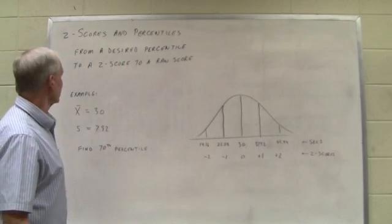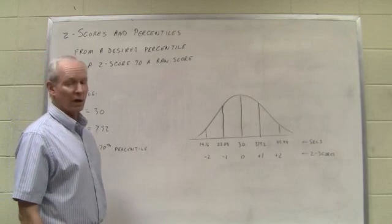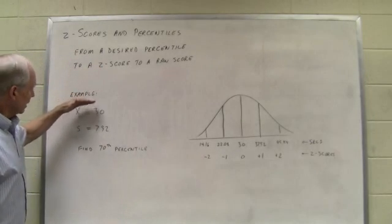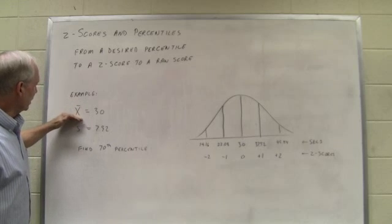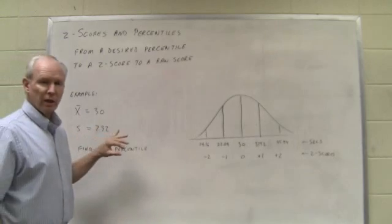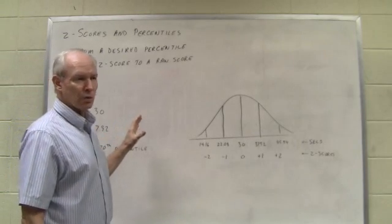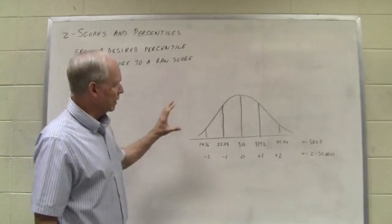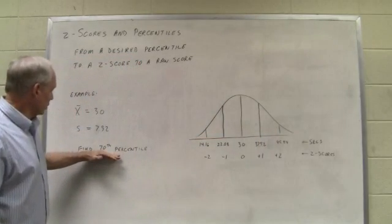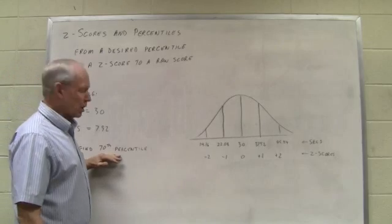For example, if we had a sample of data with a mean of 30 and a standard deviation of 7.92, and we thought it was reasonable to assume that sample came from a normally distributed population, we might want to know what raw score would correspond to the 70th percentile.